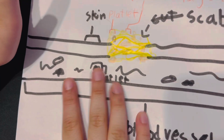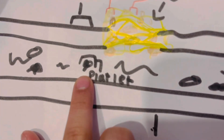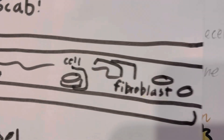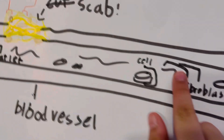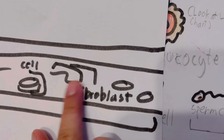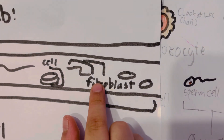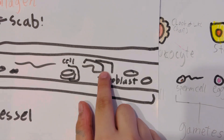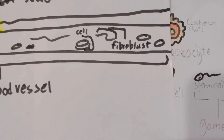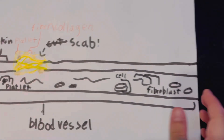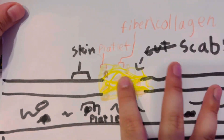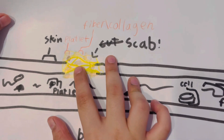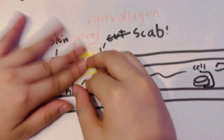Here are the different kinds of cells. This is a platelet, which will be explained more later. And then these are fibroblasts, which are basically little bits of fibrous collagen. First, a bunch of platelets start sticking to the damaged area, and after that some fibroblasts come in.